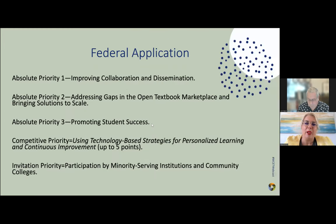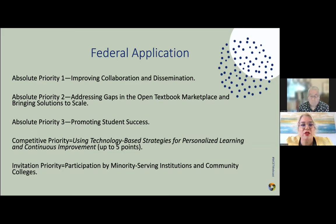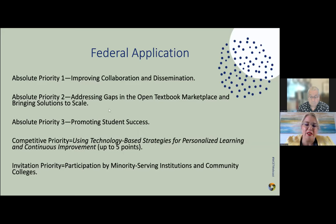As a quick overview, you can find the application on the Department of Education's main page. There are absolute priorities in this federal application that are very important to pay attention to: improving collaboration and dissemination, addressing gaps in the open textbook marketplace and bringing those solutions to scale, and promoting student success. There are also competitive priorities — using technology-based strategies for personalized learning and continuous improvement — and you get points for that. There's also an invitation priority especially for minority-serving institutions and community colleges.